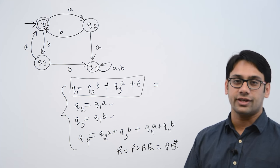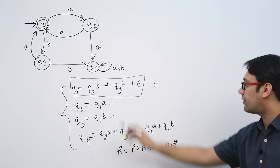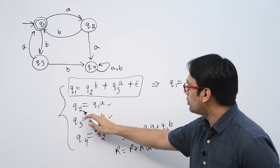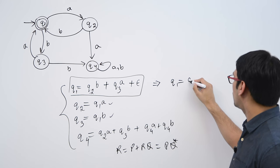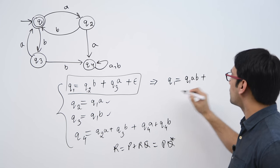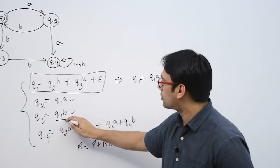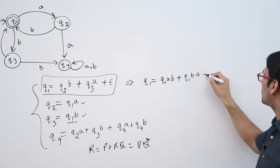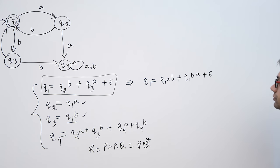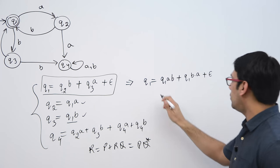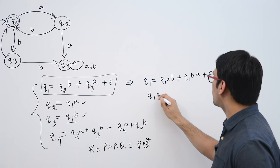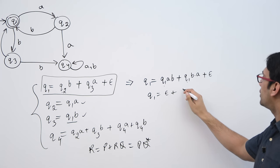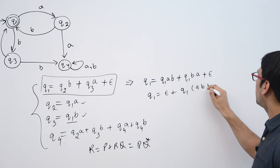We have to remove all the present states. So the first expression can be written as q1 is equal to q2b and the value of q2 is q1a. So q1a.b plus q3 can be written as q1b plus epsilon. Now this can be written as q1ab plus q1ba. So this can be written as q1 is equal to epsilon plus q1 times ab plus ba.